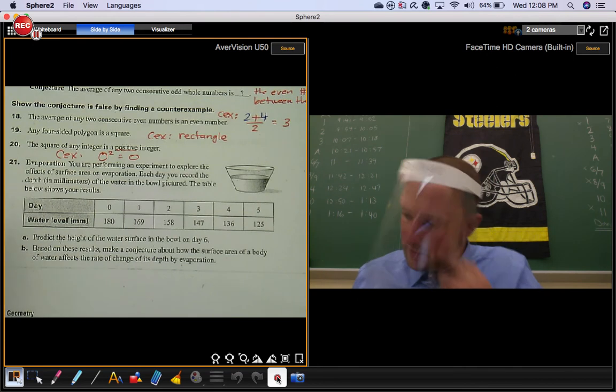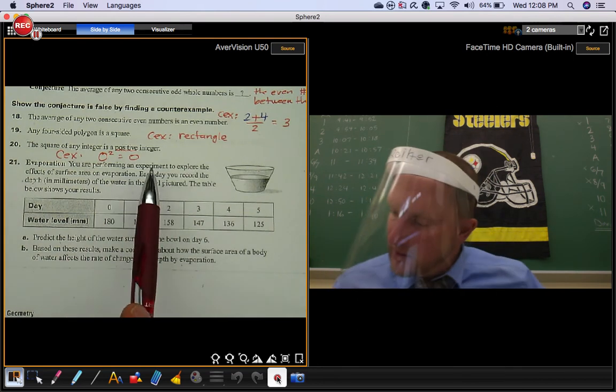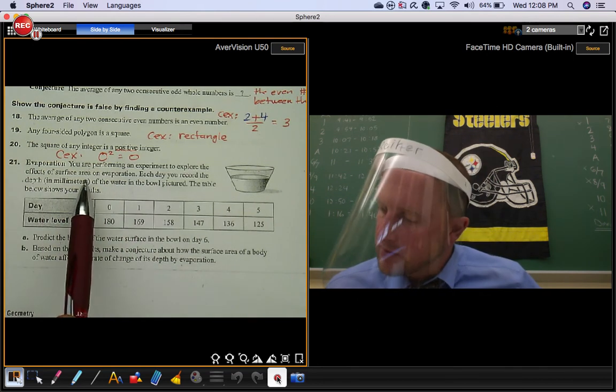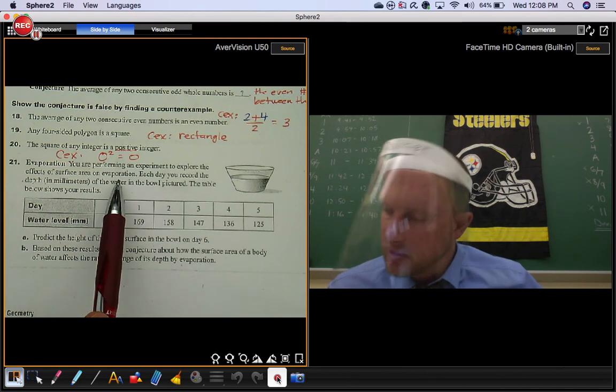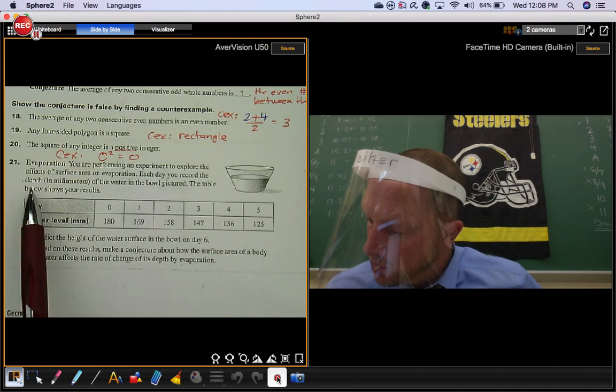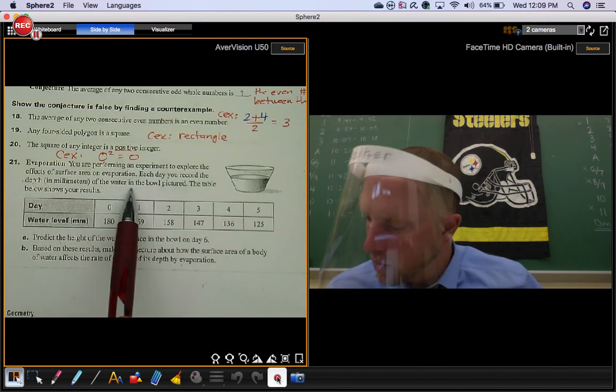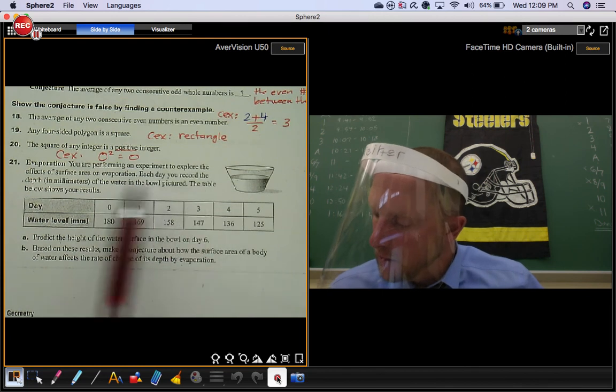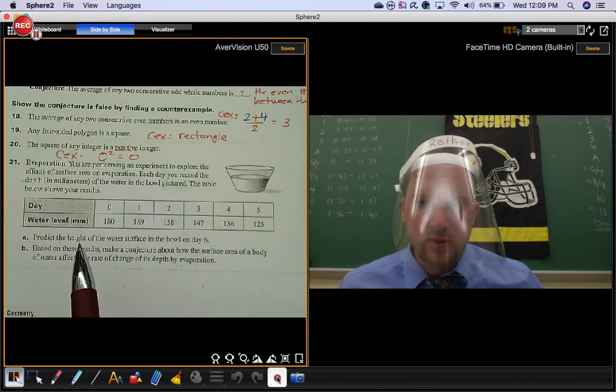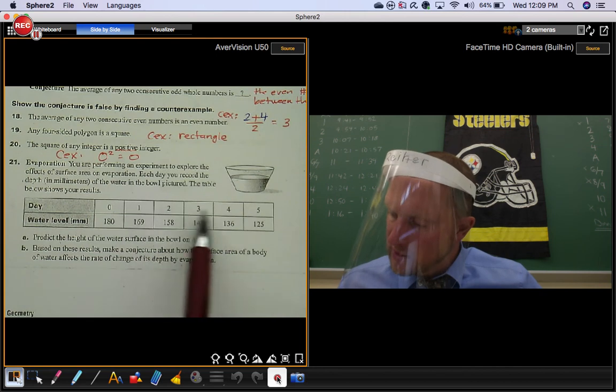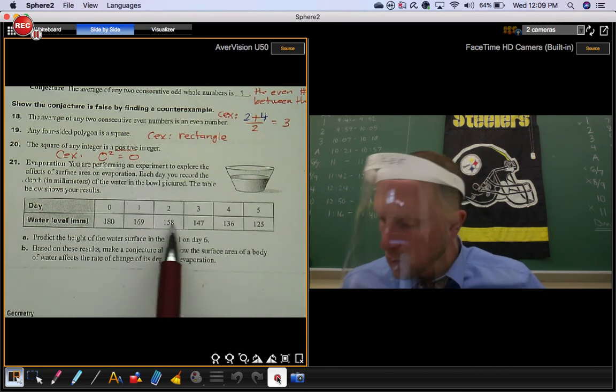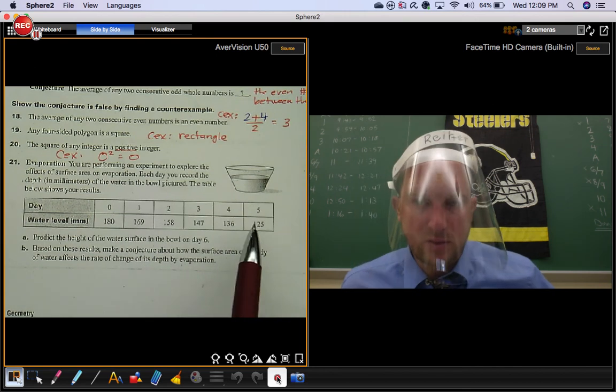Number 21. This one's on evaporation. You're performing an experiment to explore the effects of surface area on evaporation. Each day, you record the depth in millimeters of the water in the bowl pictured. The table below shows your results. So as your days are increasing, notice how your water level is decreasing. So it's definitely evaporating.